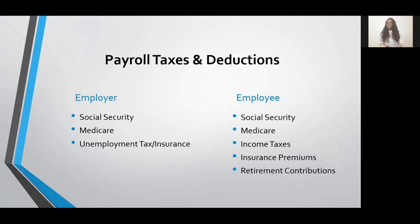Payroll taxes and deductions are also things you need to calculate. Social Security and Medicare are considered FICA taxes — both you and your employee pay these. Social Security is 6.2% of their paycheck and Medicare is 1.45%; you each pay matching amounts. You'll deduct the employee's share from their paychecks and remit it with your own portion when you remit FICA taxes to the IRS. Unemployment tax or insurance is the employer's responsibility and also needs to be remitted, but there's a cap — a maximum of about $7,000 — so it doesn't get too expensive.